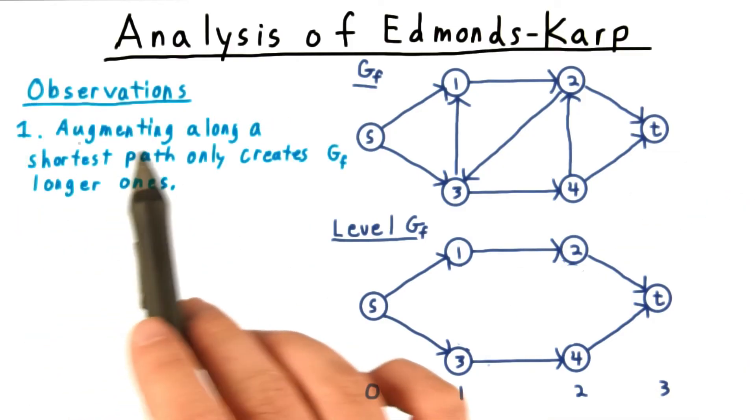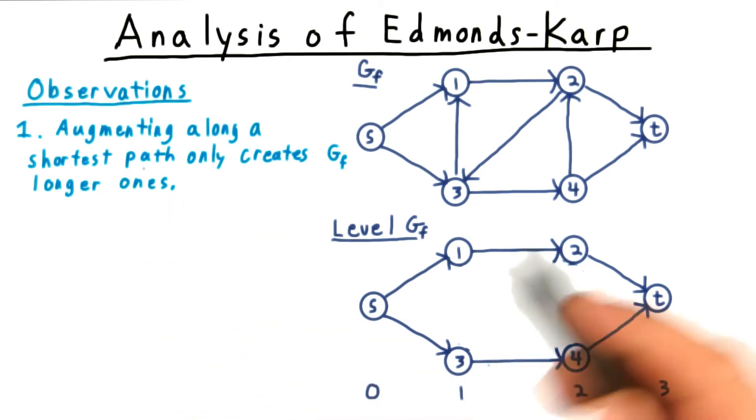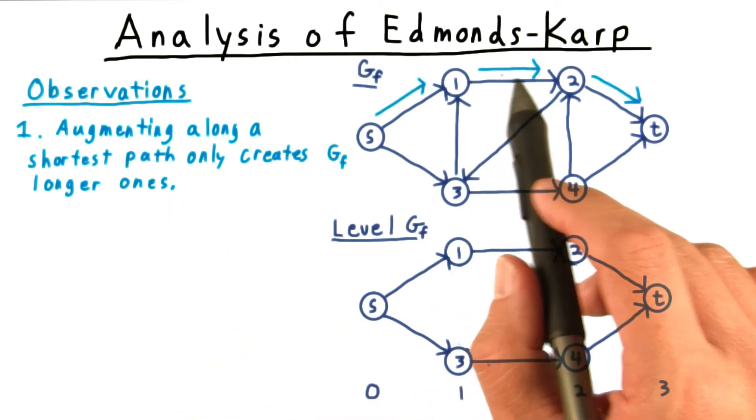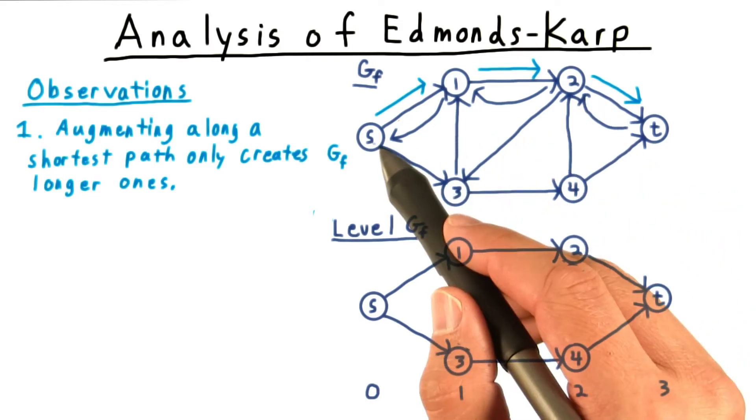We first observe that augmenting along the shortest path only creates paths that are longer ones. Say that we push flow along this path here. Then we've introduced back edges along this path.